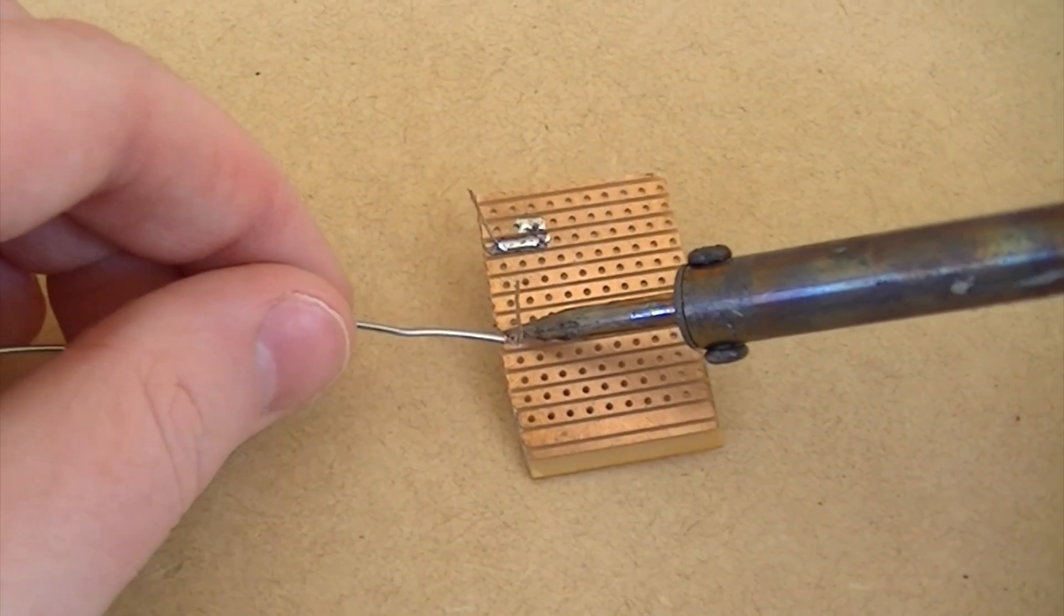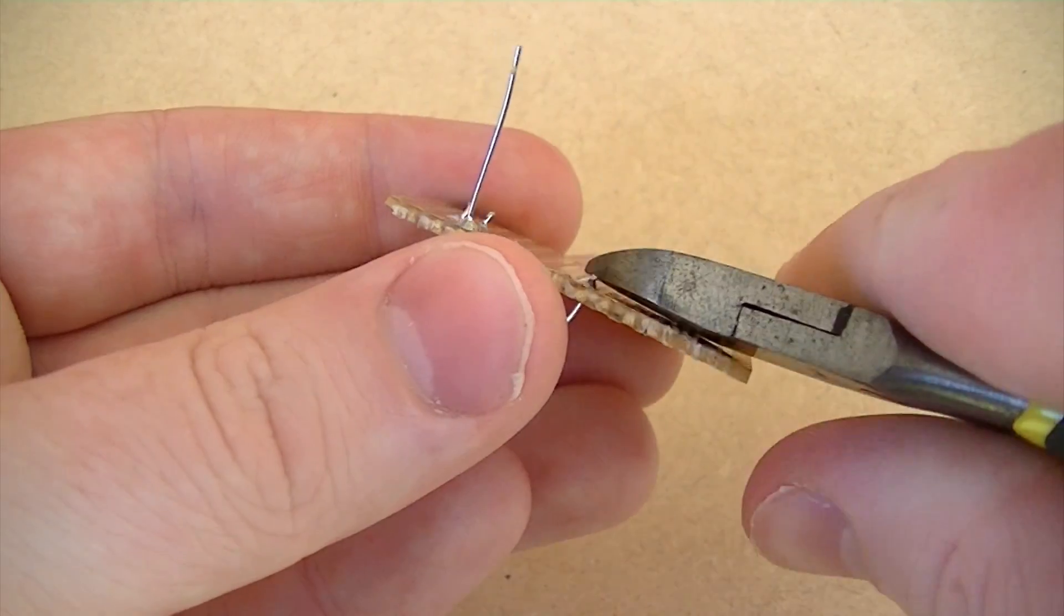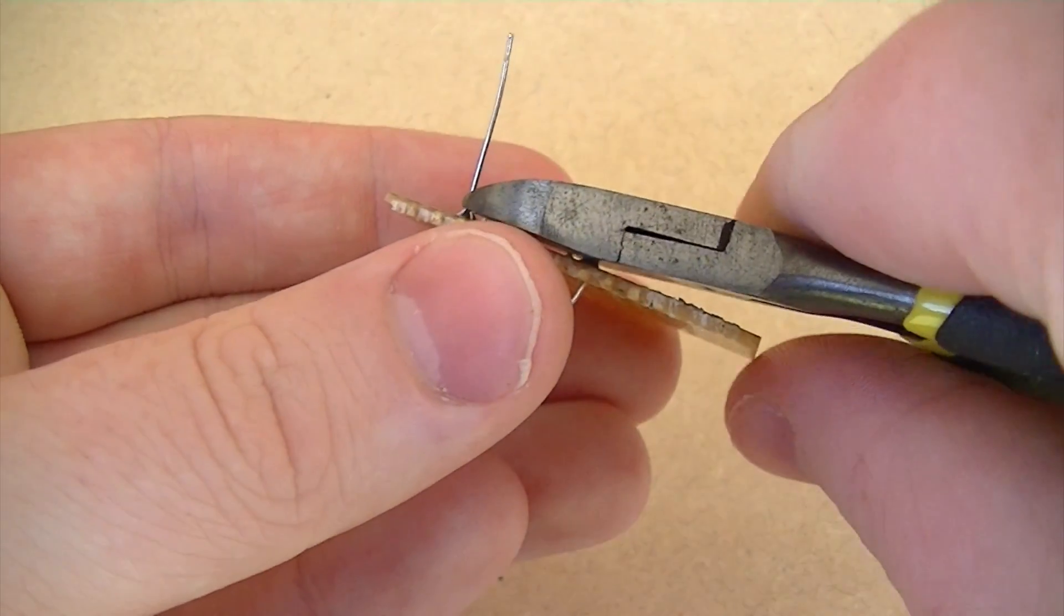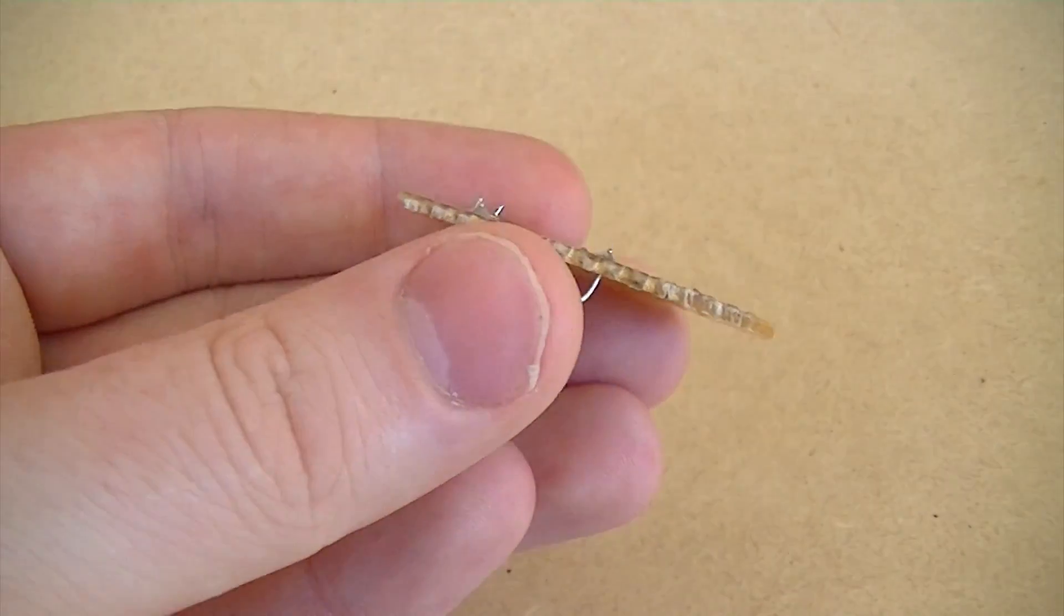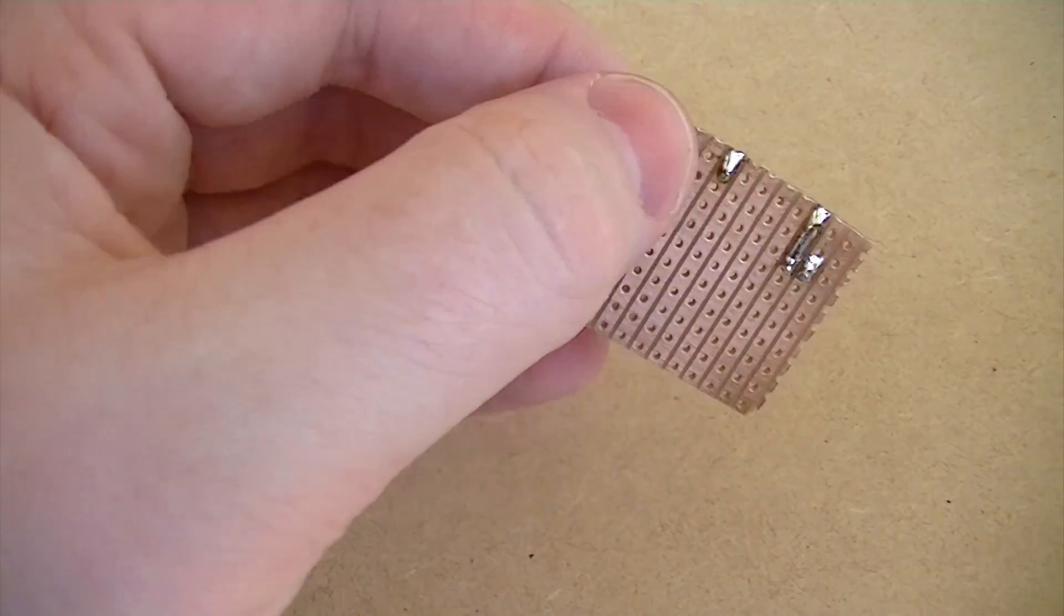After soldering it in position, cut the excess leg off the resistors. Your board should look like this.